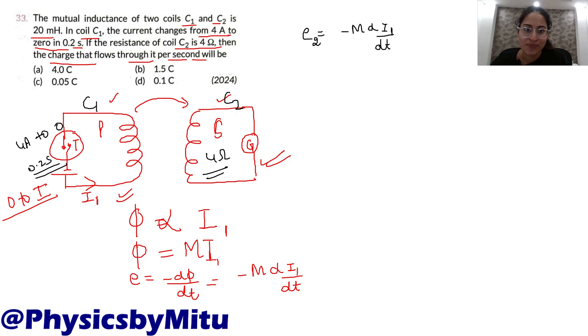Now putting the values: M is 20 millihenry, so 20 × 10^-3. di1/dt: current changes from 4 to 0, so (0 - 4) upon time which is 0.2 seconds. So this will be 0.4 volt.